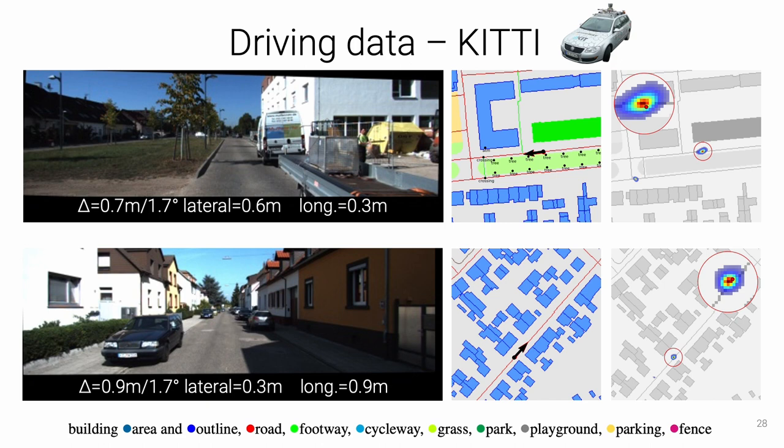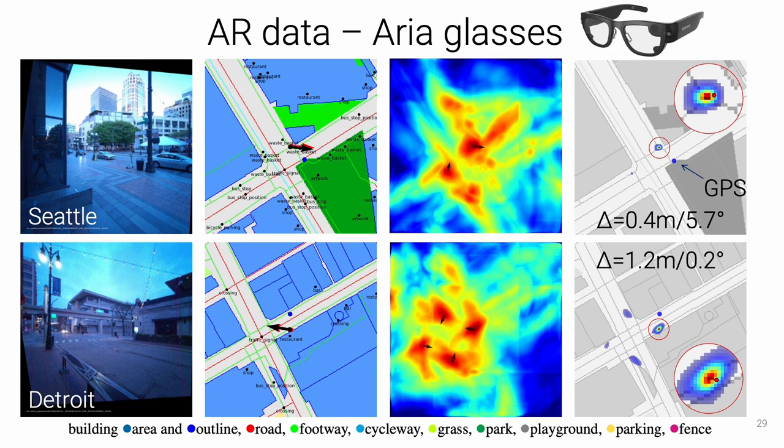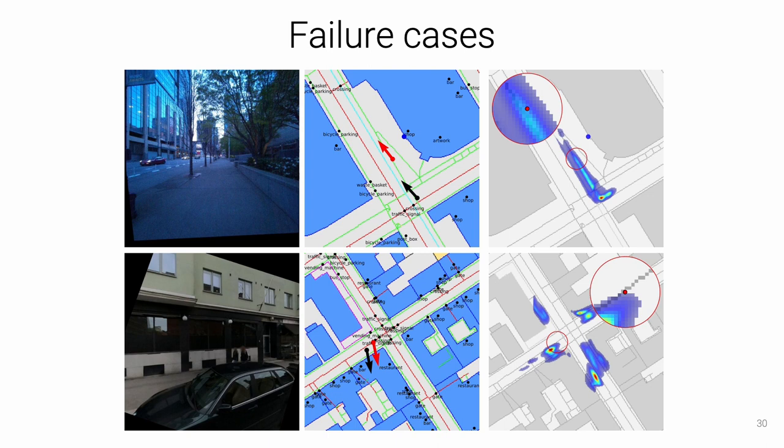We consider typical augmented reality data captured with Aria glasses. Our network provides much more accurate positioning than GPS, here shown in blue, which falls short in urban canyons like downtown Seattle. Semantic maps often do not contain sufficient information to localize a single image with limited field of view. The maps are sometimes spatially inaccurate or are missing some objects. In the top example, trees are clearly visible in the image but not in the map, making the localization ambiguous.